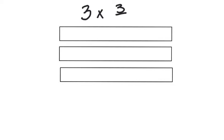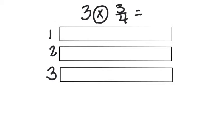Now we're going to move on to multiplying a fraction times a whole number. We're going to work with three times three fourths — that's our equation. Each one of these tape diagrams represents one whole, so we have three of them. Because we're multiplying, we can interpret this equation as three groups of three fourths. We need to partition each tape diagram into our unit, and the unit we're working with are fourths.